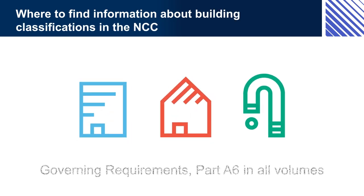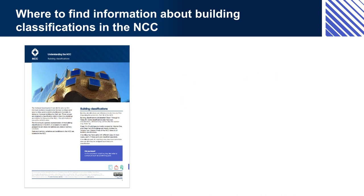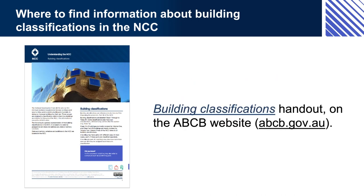Building classifications are part A6 of the governing requirements in each volume. The text is identical in all volumes, as are all of the governing requirements. If you have read the information on building classifications in one volume, then you have read what it says in all other volumes as well. Part A6 contains the formal definitions of each building classification and some explanatory information, which discusses distinctions between the classifications and gives a lot of useful examples. The building classifications handout is another source you can use — it contains more explanations and examples that can be helpful, especially when trying to distinguish between two possible classifications. It is available from the ABCB website.